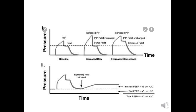The third condition shows decreased compliance: both the peak inspiratory pressure and the plateau pressure increase, but the difference between them remains unchanged. The lower graph shows the end expiratory hold procedure from which we can measure the intrinsic PEEP or auto-PEEP.